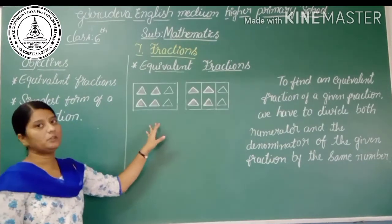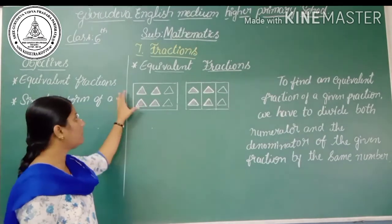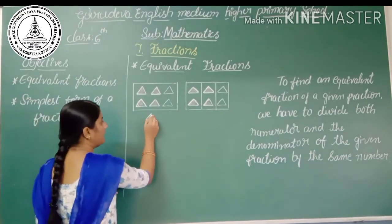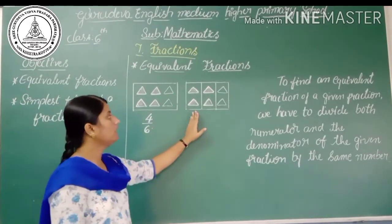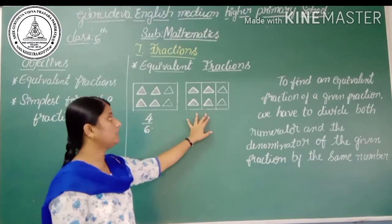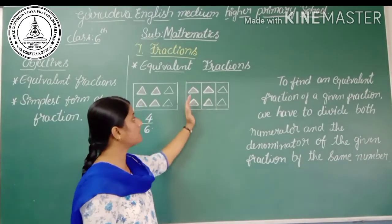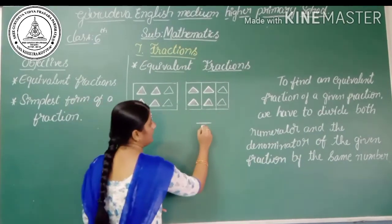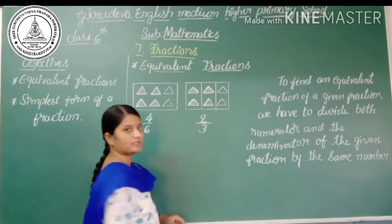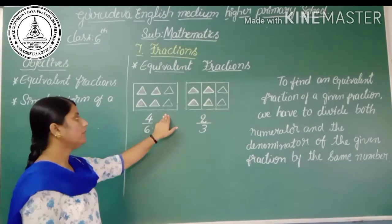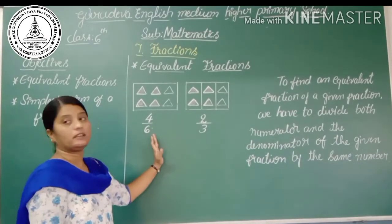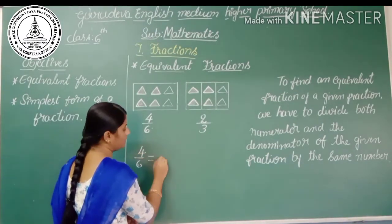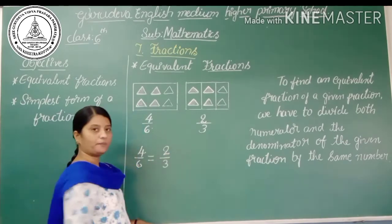Let us observe the picture and write the fraction. In 6 triangles, 4 triangles are shaded, so the shaded part is 4/6. In the other picture, there are 3 parts, and in those 3 parts there are 2 triangles shaded, so in total 3 parts, 2 parts are shaded, giving 2/3. If we place these two pictorial figures one over the other, they are found to be equal.